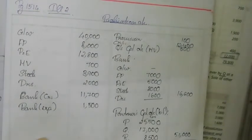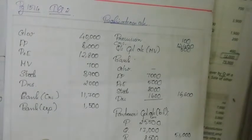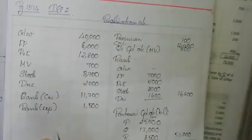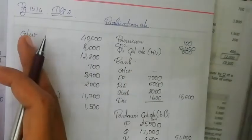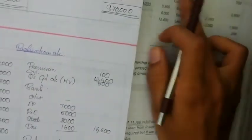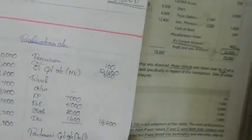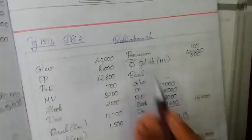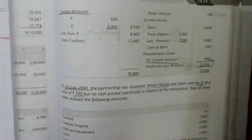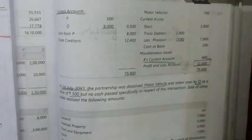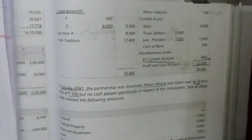When you transfer assets it is not a debit balance in the realization account — the realization account shows the asset. The provision for debtors is a liability-type credit. We transfer all assets except cash to the realization account.